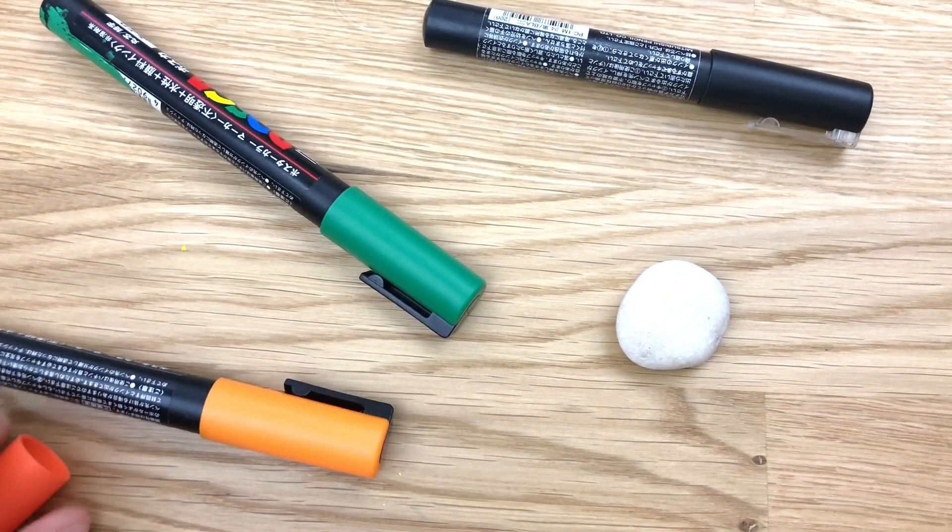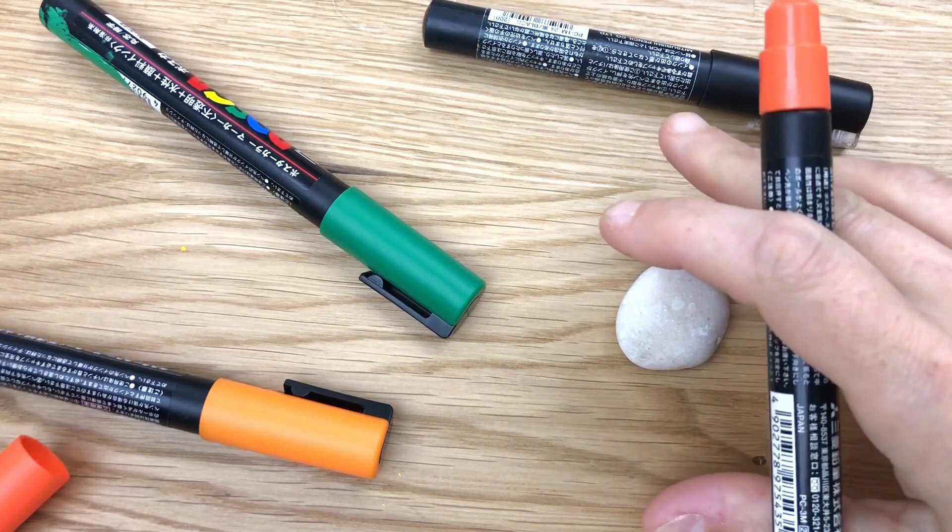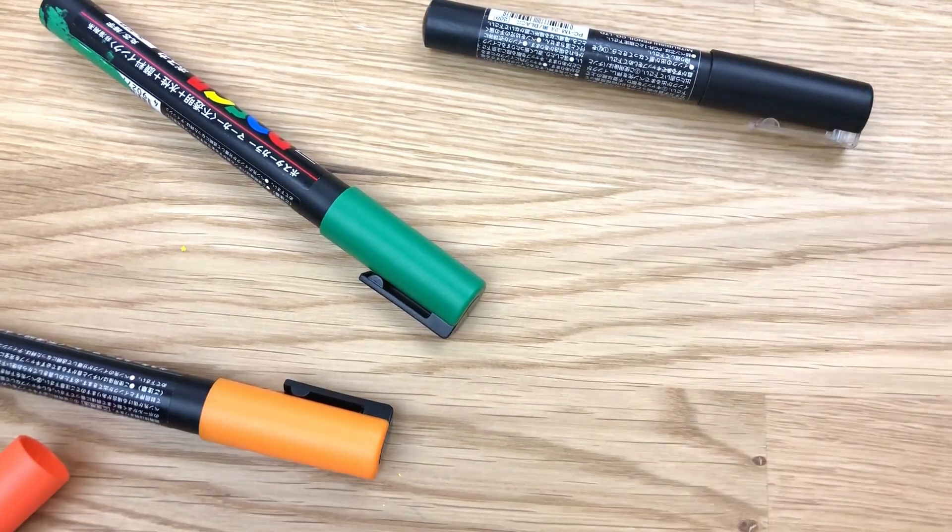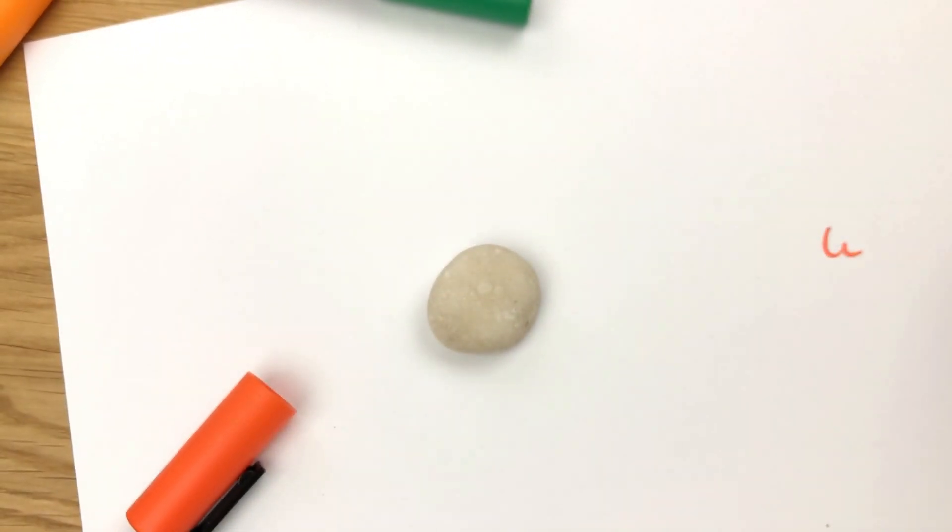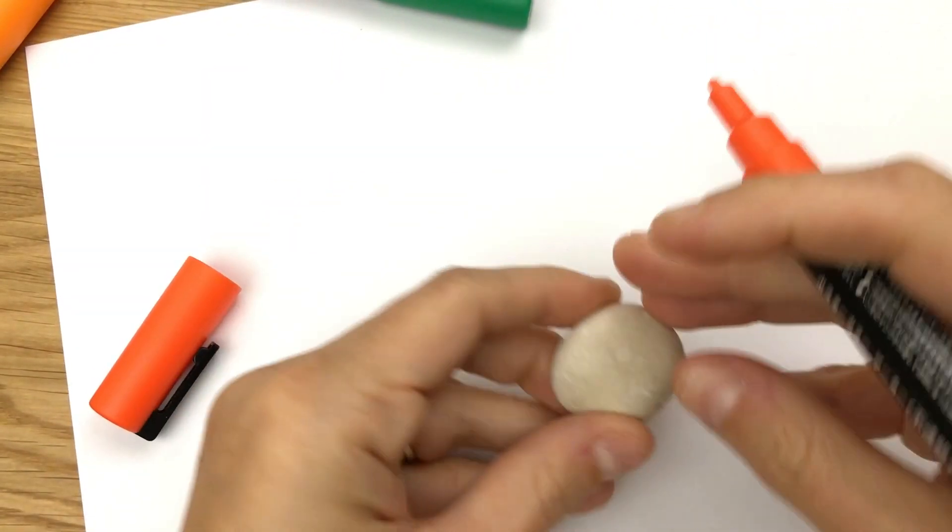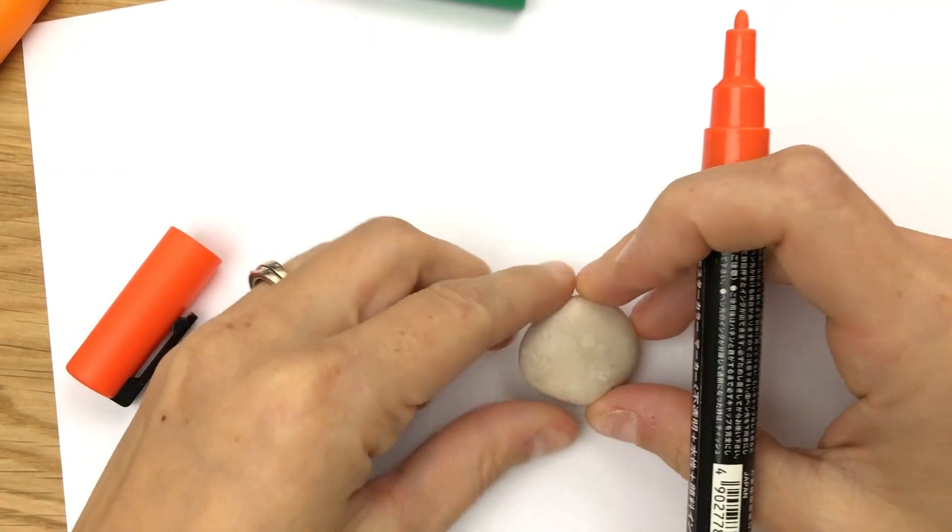So we're gonna start and just do our shape of our pumpkin. I don't have a piece of paper here, let me put a piece of paper to work on. I always like to work on a piece of paper so I can doodle on the side to make sure my pen's flowing before I go in for painting.